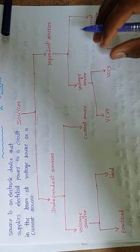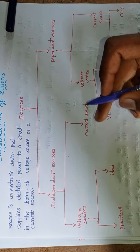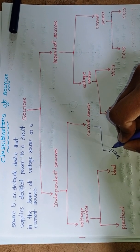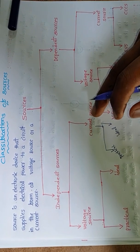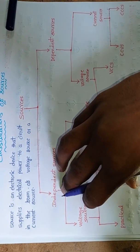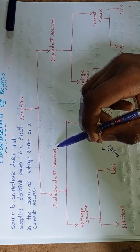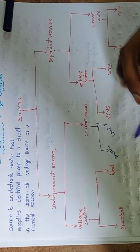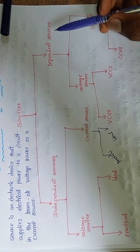Voltage sources and current sources are again divided into two types: one is practical sources and another one is ideal sources. Current sources are also divided into two types: one is practical current sources and another one is ideal current sources. Independent sources means the sources which do not depend on the circuit elements — those are known as independent sources.